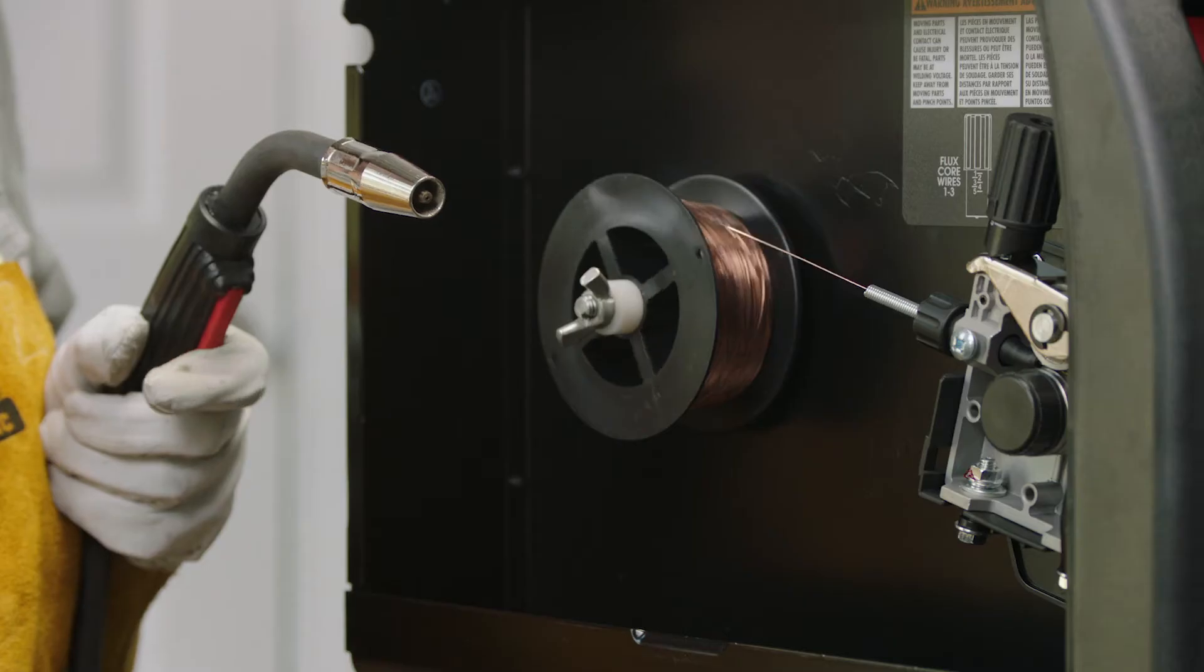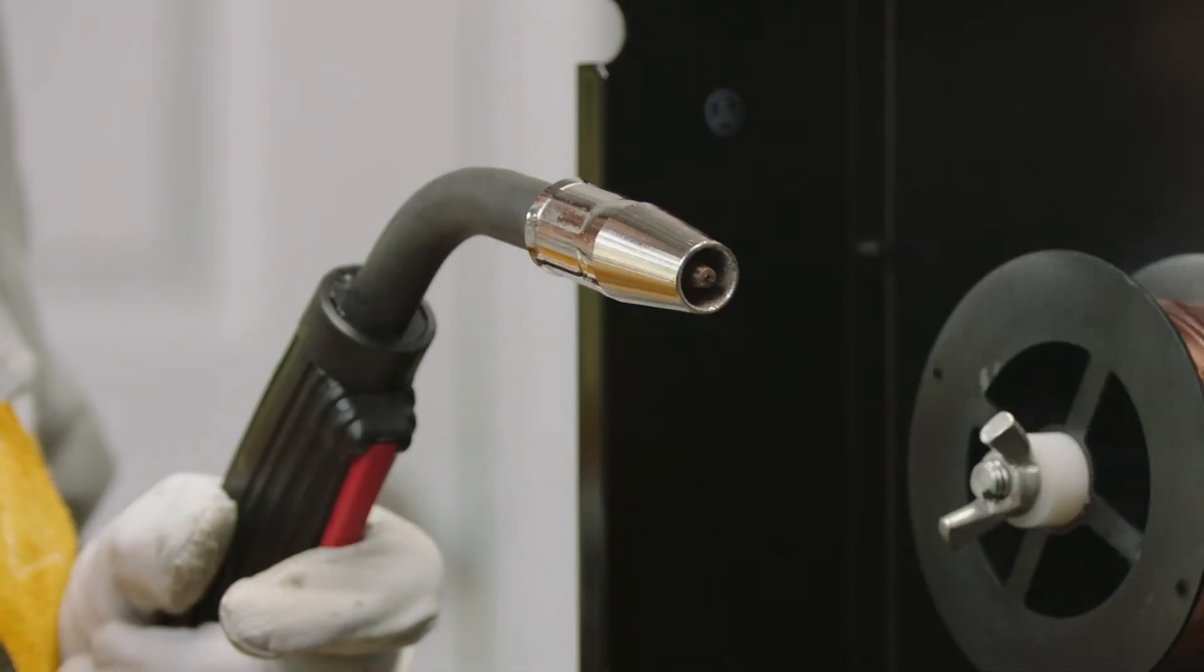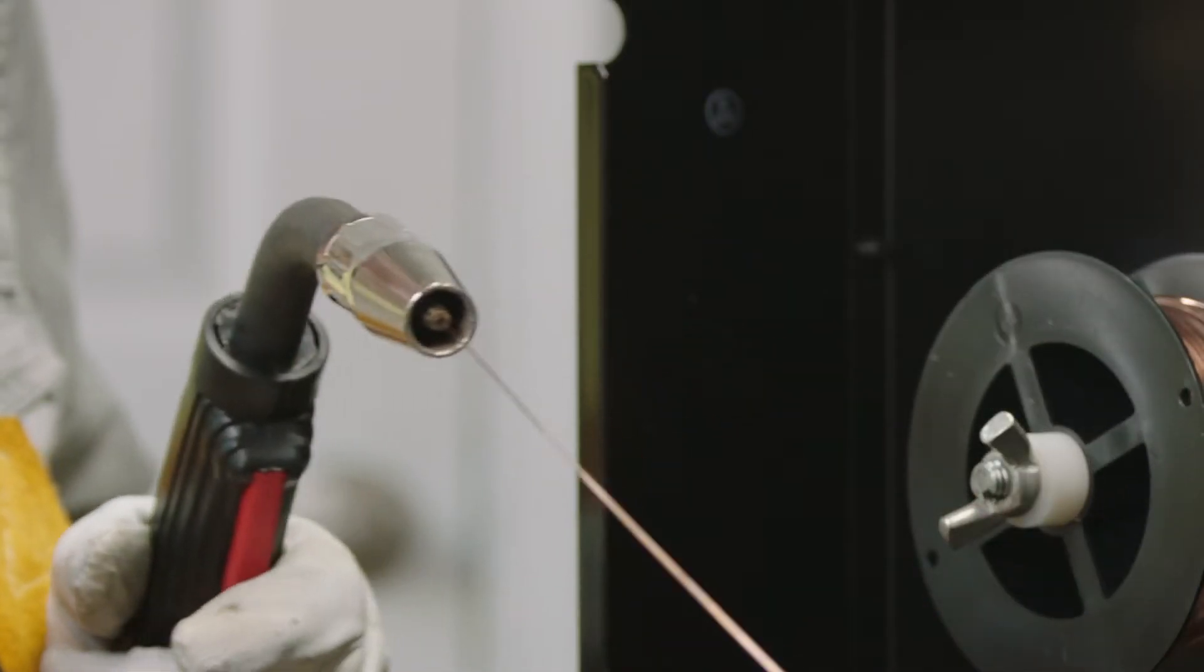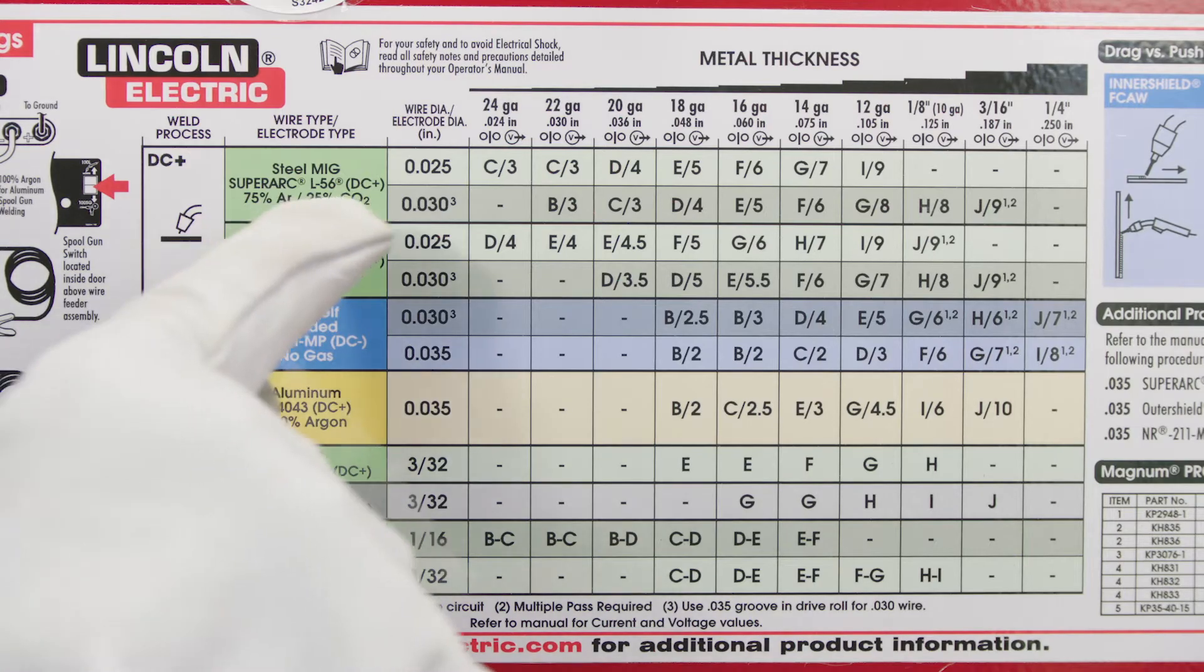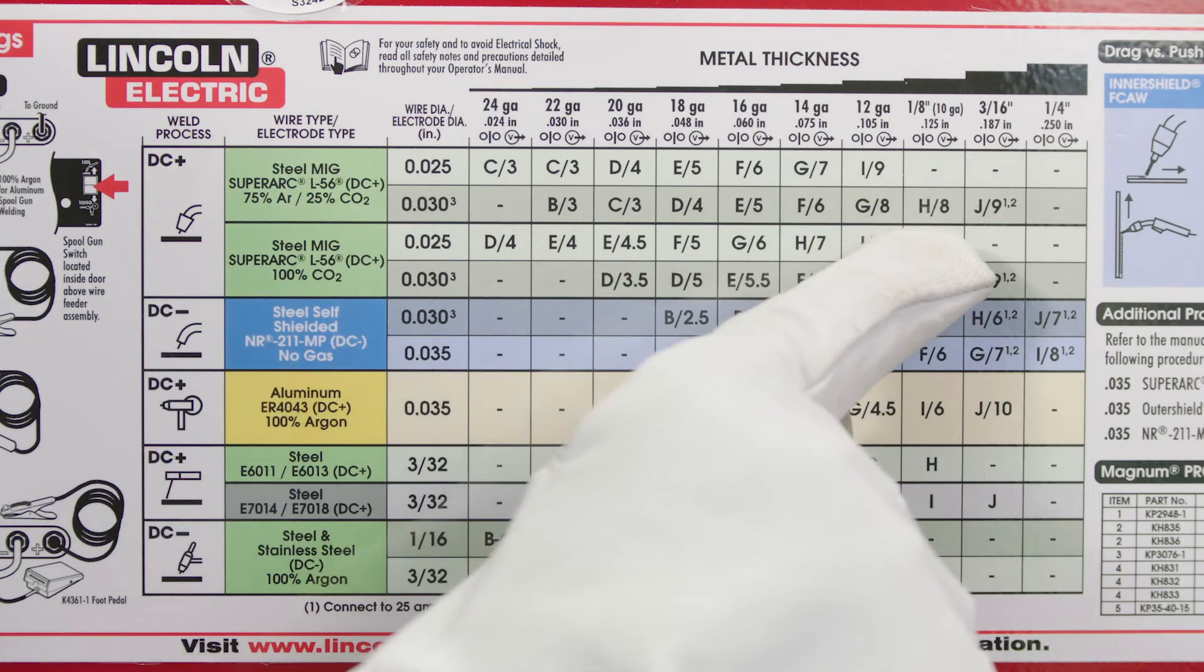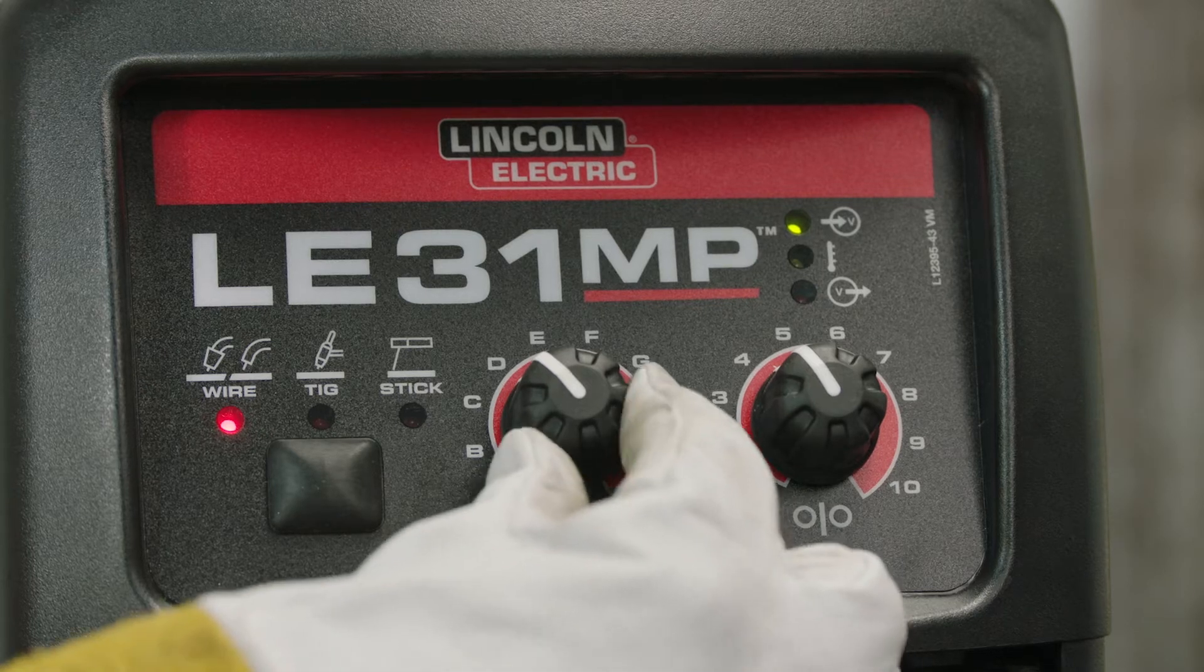Pull the trigger to move the wire through the hose. You'll want to cut the wire so that you have a ¾ inch stick out. Then, set the amperage and wire feed controls. Reference your welder's user manual to determine the proper settings.